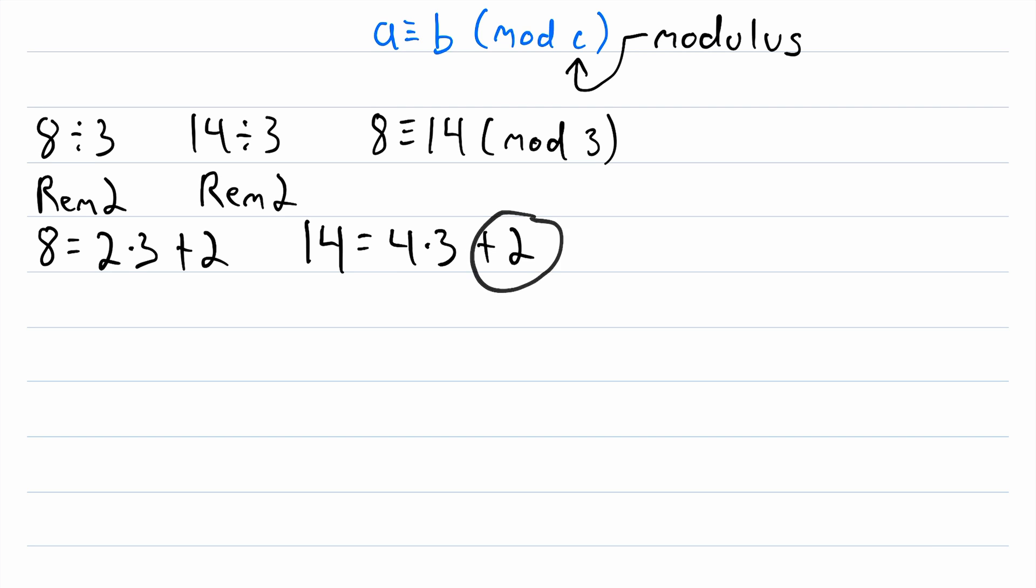So again, we've got a remainder of 2. So since 8 and 14 both have the same remainder when divided by 3, we say that 8 is congruent to 14 mod 3. So hopefully that gives you a decent idea of what modular congruence is, but let's look at another example.